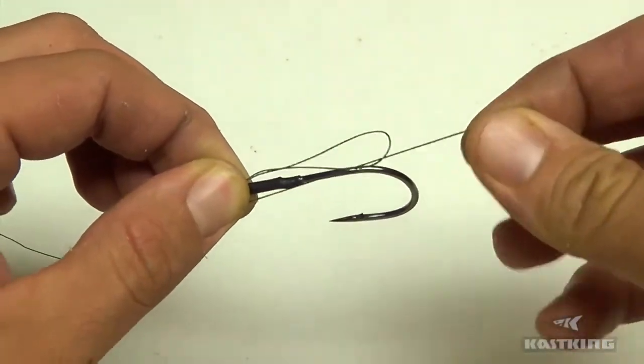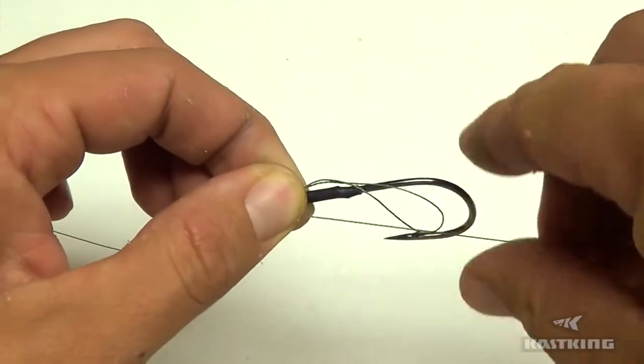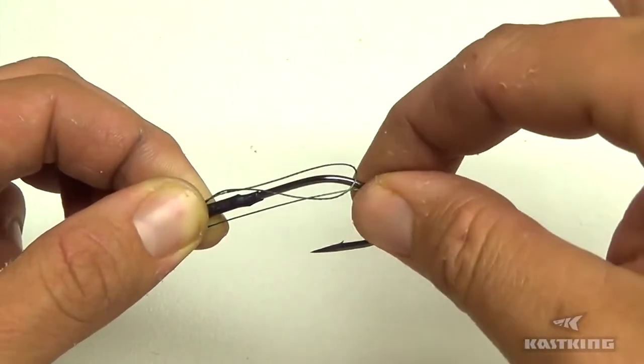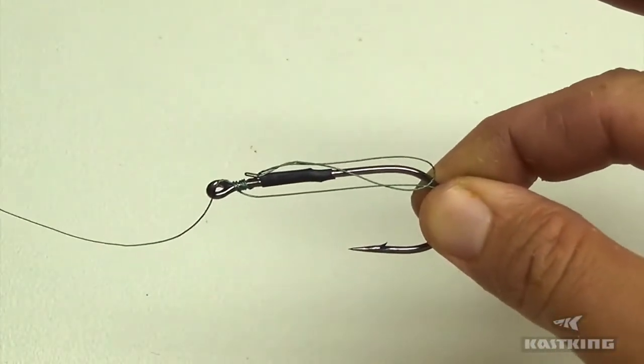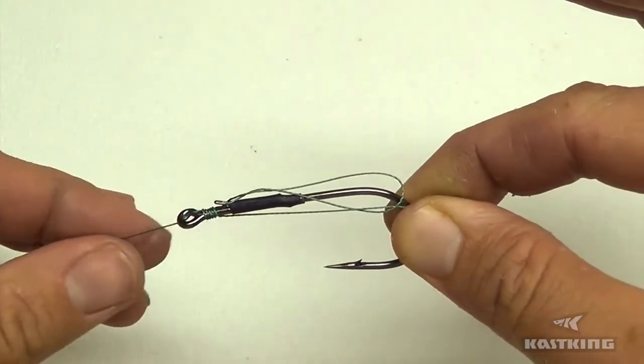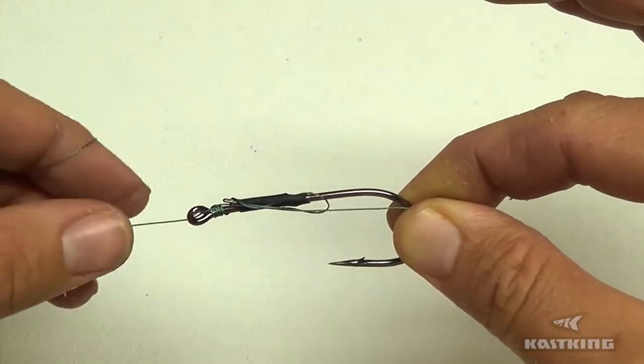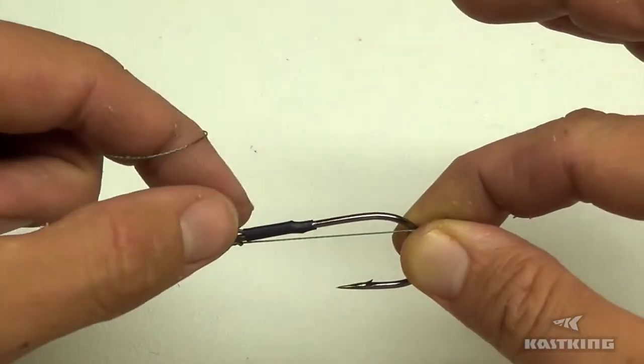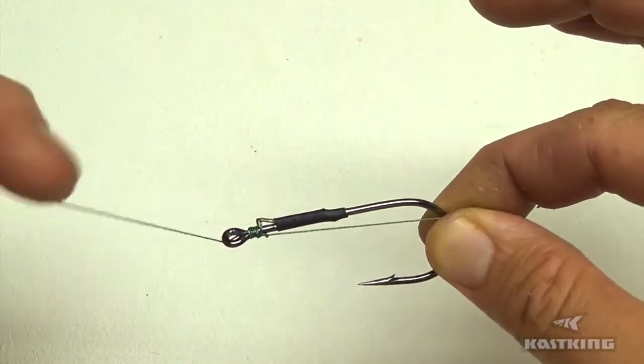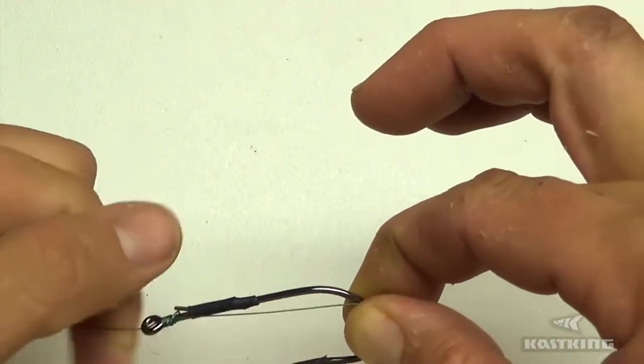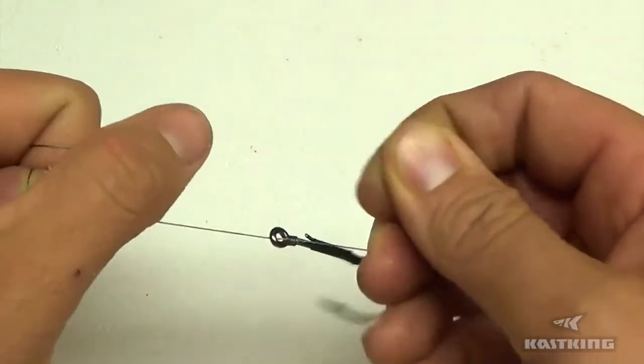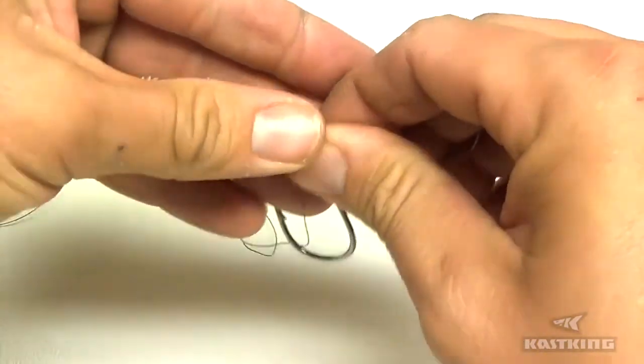Now you're going to want to pull this knot tight with the main line. So take your tag end and pinch it against the hook so you're holding on to just the hook and the tag end of your line, and then you can pull this, cinch it tight with the main end of the line. Then you can really pull it down good on both of them. Then you're going to cut your tag end.